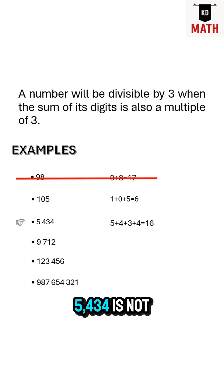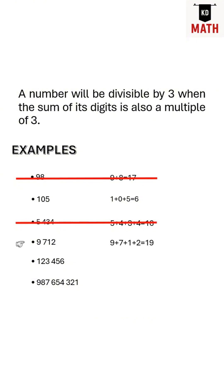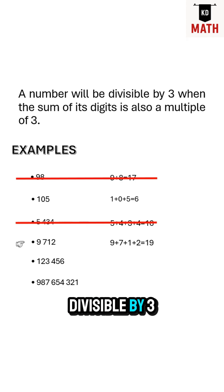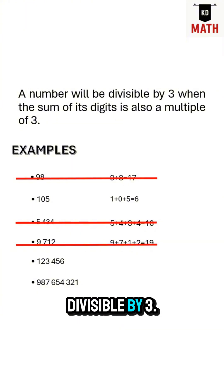5,434 is not divisible by 3 because the sum of its digits is 16, which is not divisible by 3. 9,712 is not divisible by 3 because the sum of its digits is 19, which is not divisible by 3.